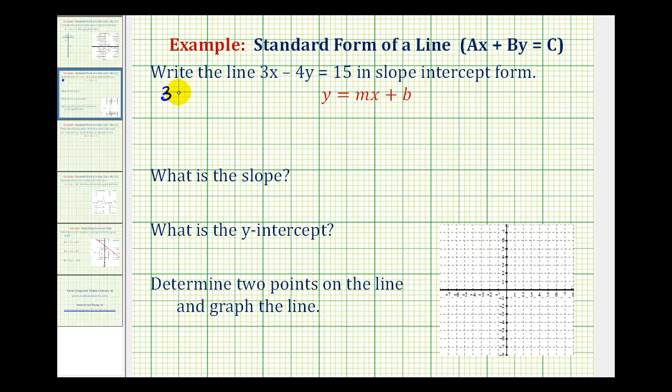So if we have 3x minus 4y equals 15, the first step is to get the x term on the right side of the equation. We can undo this positive 3x by subtracting 3x on both sides of the equation.